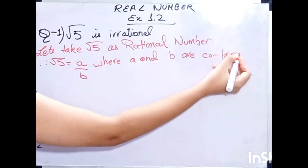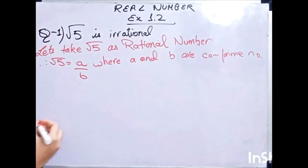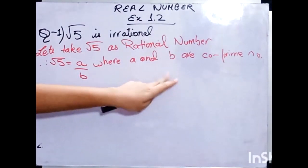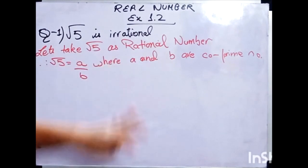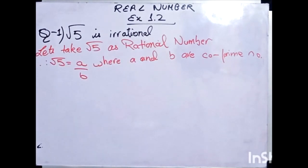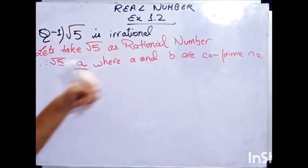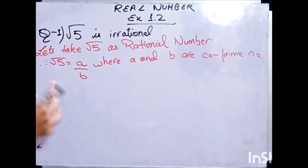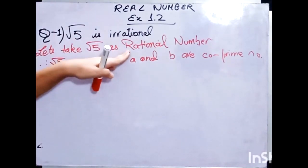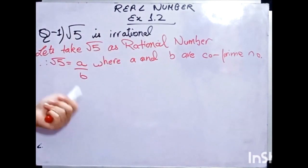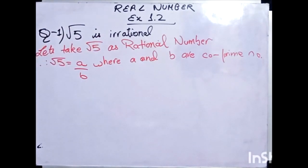Now, what is a co-prime number? Co-prime numbers are two numbers that have no other factor in common. So what we will do is use the contradiction method. We will contradict that root 5 is rational — show that assumption is wrong — and then conclude that it must be an irrational number.